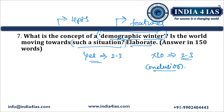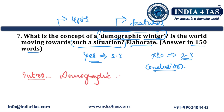We should also write about the factors contributing to demographic winter. The question is for 10 marks and 150 words. In the introduction, we should define demographic winter. Demographic winter refers to declining birth rates and an increasing aging population in many countries around the world. This phenomenon has significant implications for economies, healthcare systems and social structures.